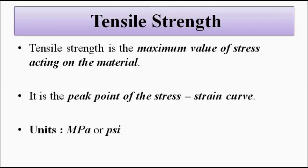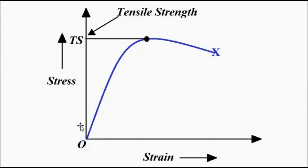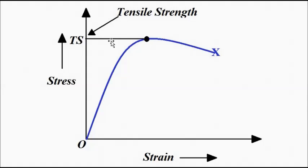Let us consider a stress-strain curve. On the vertical axis, the y-axis, we have the stress, and on the horizontal axis, the x-axis, we have the strain. This is the stress-strain curve. This point — the peak of the stress-strain curve — is the maximum value of stress. If we draw a line parallel to the strain axis, where it meets the stress axis, that will give us the value of the tensile strength. It is the peak value of stress in this stress-strain curve.